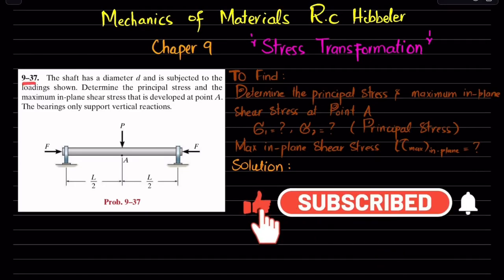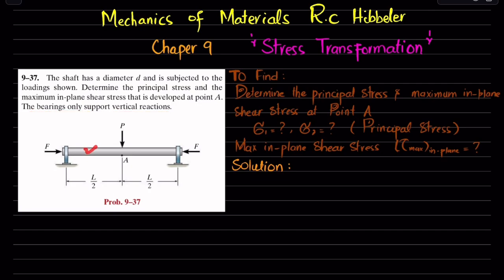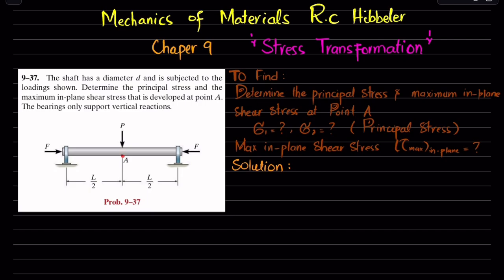Welcome back. Problem 9-37 is taken from chapter 9, Stress Transformation, from the book Mechanics of Materials by R.C. Hibbeler. The statement is: the shaft has a diameter d and is subjected to loading shown. Determine the principal stresses and the maximum in-plane shear stress that is developed at point A. The bearings only support vertical reactions. You have to find sigma 1, sigma 2, and maximum in-plane shear stress.